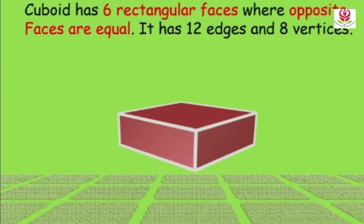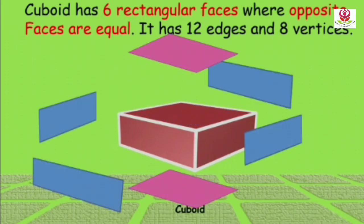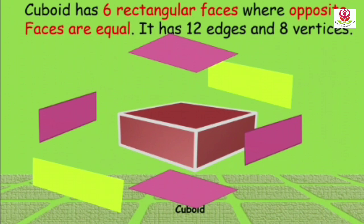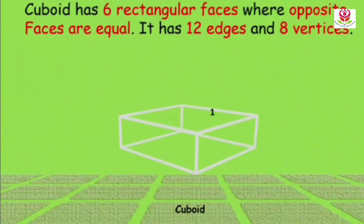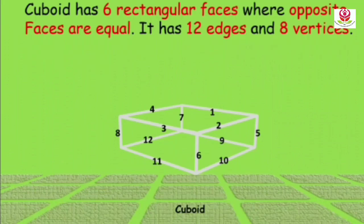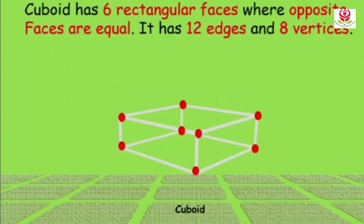Next is cuboid. Cuboid has 6 rectangular faces and 8 vertices, where opposite faces are equal. It has 12 edges — 1, 2, 3, 4, 5, 6, 7, 8, 9, 10, 11, and 12. Cuboid also has 8 vertices or 8 corners, same as the cube.